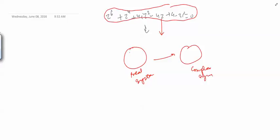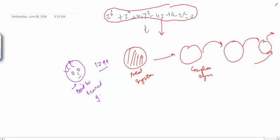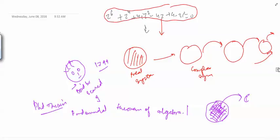Then Gauss, in the year 1799, came and solved this problem in his PhD thesis. He proved the Fundamental Theorem of Algebra. This theorem tells you that you don't have to extend your number system — every equation with complex coefficients has roots in the complex plane.